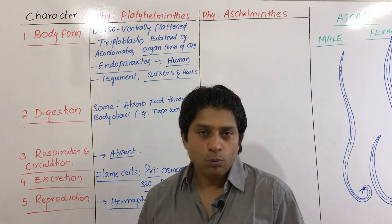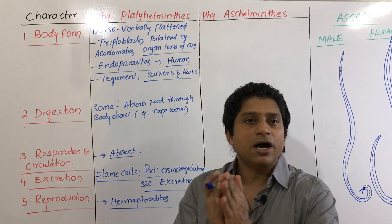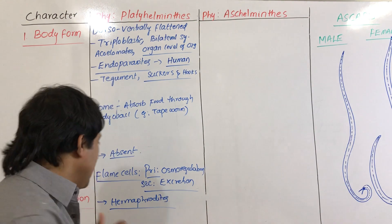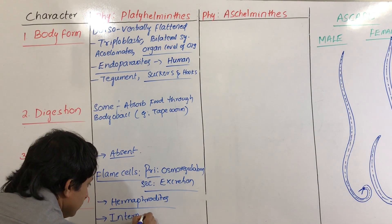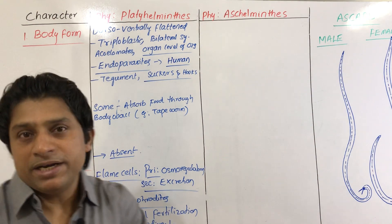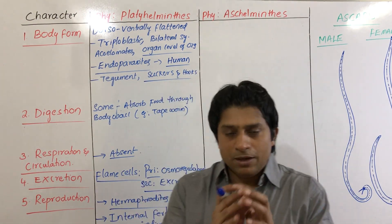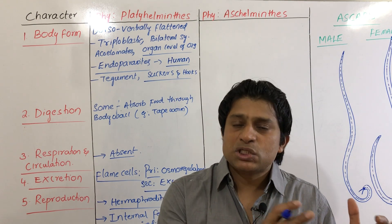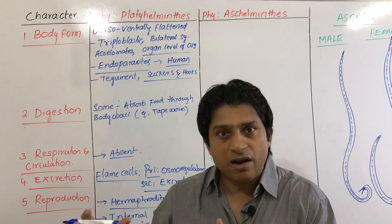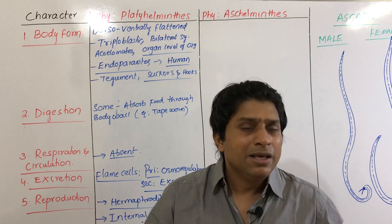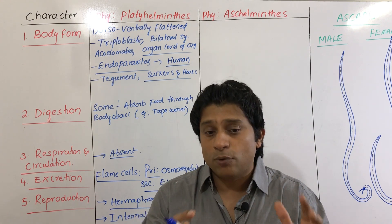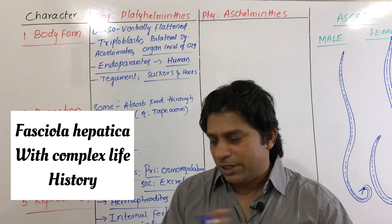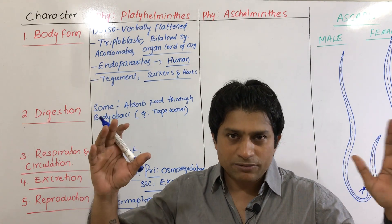Regarding reproduction — all Platyhelminthes are hermaphrodites, meaning bisexual or monoecious; both male and female gametes are produced by the same individual. Fertilization is internal and development is indirect with a larval stage. In some Platyhelminthes like Fasciola hepatica, the life history is complex with several larval forms.